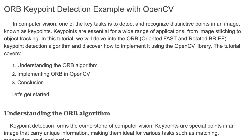Hello and welcome back to my channel. In this tutorial, I'm going to explain ORB keypoint detection example with OpenCV in Python. One of the key tasks in computer vision is to detect and recognize distinctive points in an image, known as keypoints. Keypoints are essential for a wide range of applications, from image stitching to object tracking.